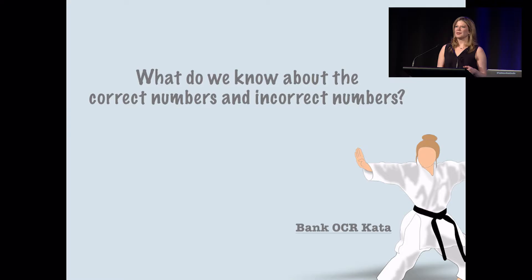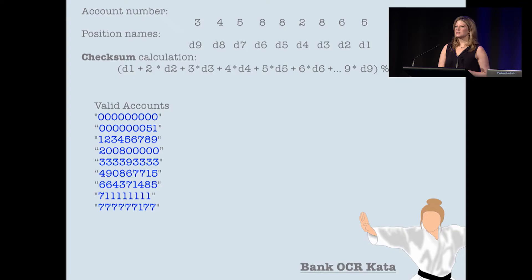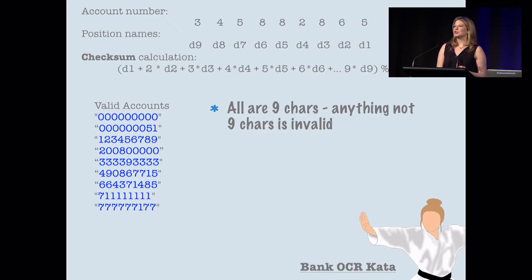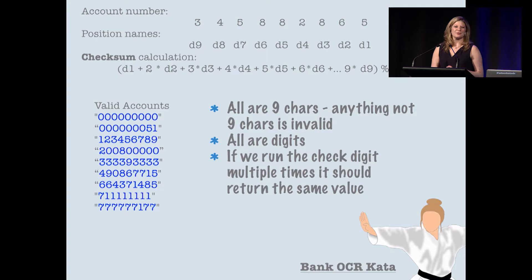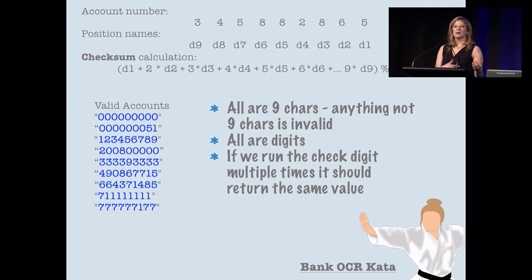So what do we know about these bank account numbers? How can we change the way we start to think about our tests? Here's the checksum and the valid accounts. We know they're all nine characters long — anything not nine characters long would be invalid. We know all those characters are digits — anything that's not a digit probably means it's invalid. We also know that if we run the checker multiple times over the same string, it should always return the same result. This function should not depend on when we run it.